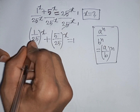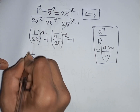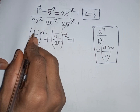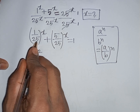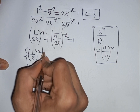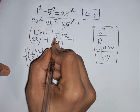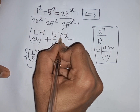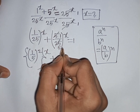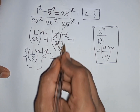Now, 1 over 25 can be written as (1 over 5) bracket power 2, because 1 squared is 1 and 5 squared is 25. The second term becomes 5 divided by 25, that means it simplifies to (1 over 5) power 1, which equals 1 over 5.